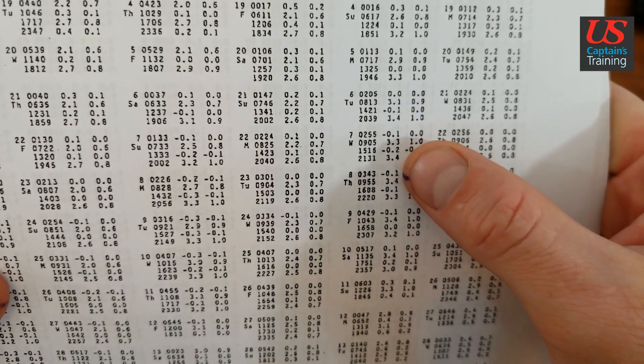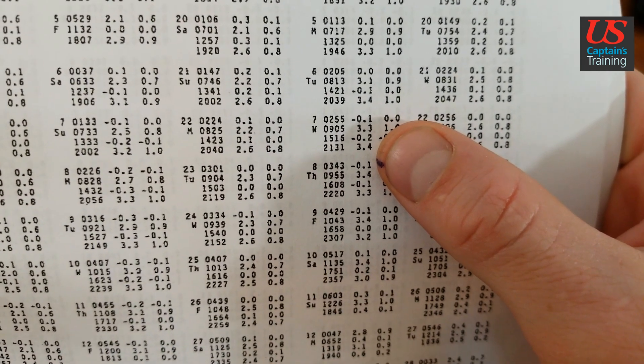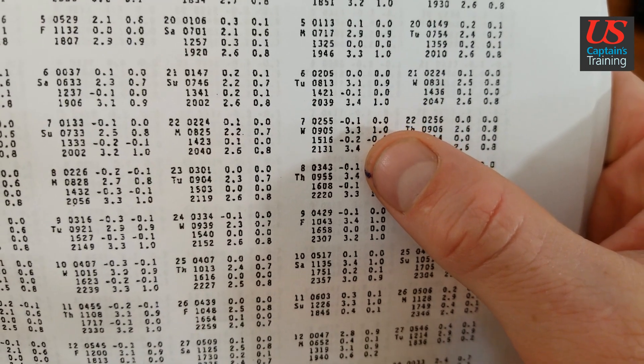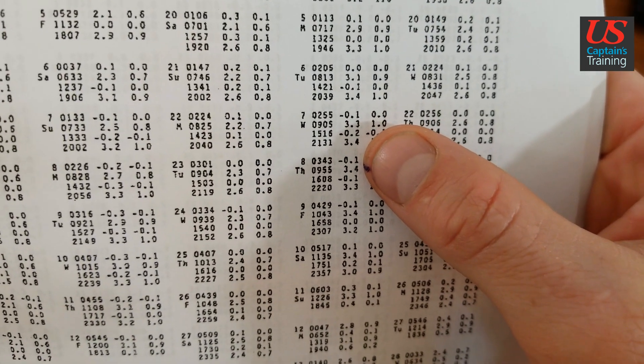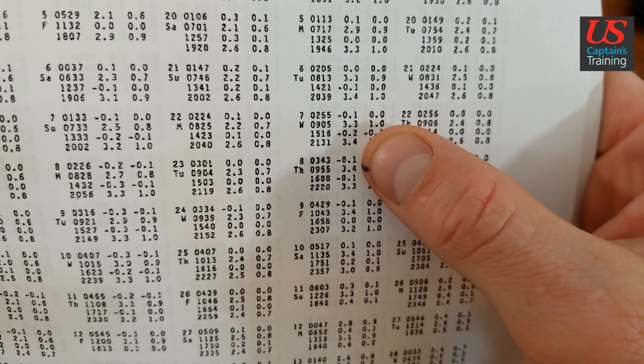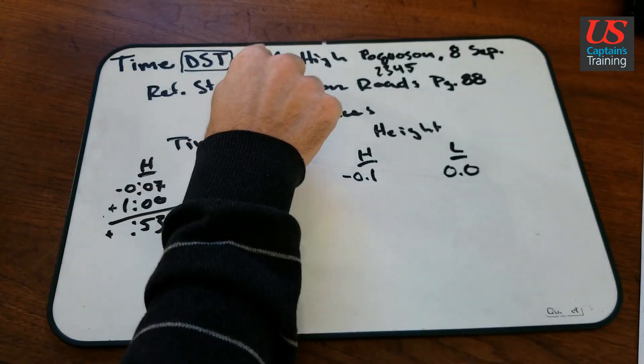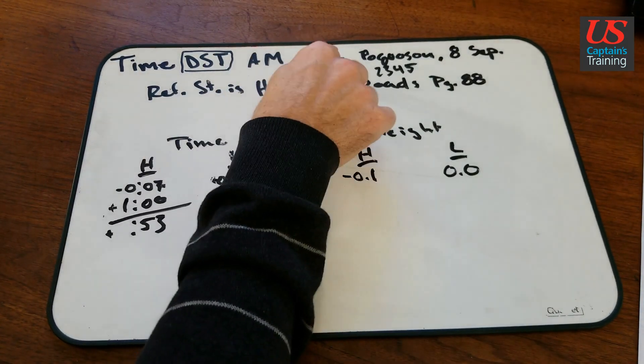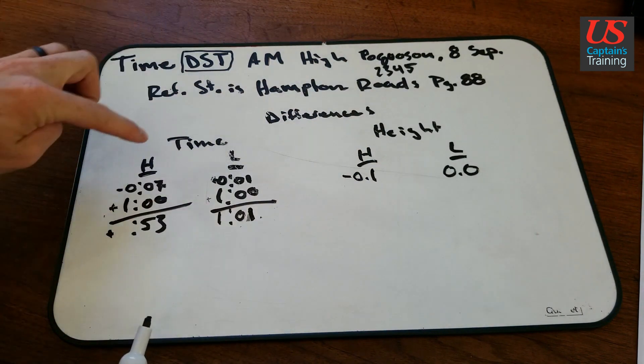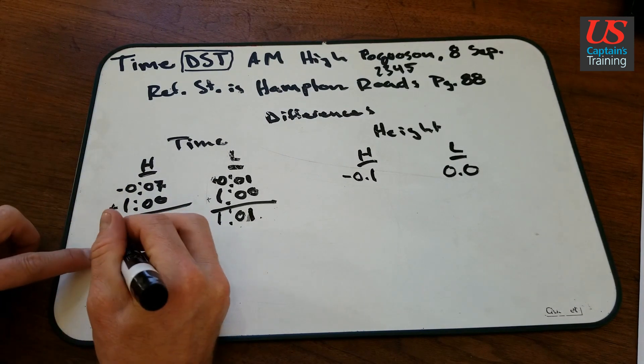So here we get AM low at 343, we get AM low of negative 0.1. At 955, we get AM high tide plus 3.4. So 955, the AM, the time DST AM high, 955. So AM high, we got time high 955 right here.